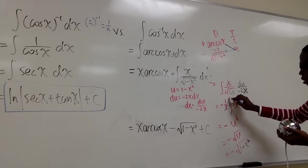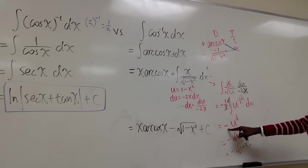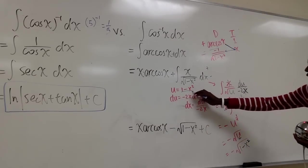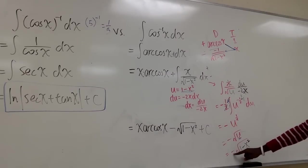And the 2 cancels out with that 2. You have a negative u to the half. And the negative u to the half in radical form is negative radical u. And we just do the final replacement and take it back to the x world. u was equal to 1 minus x squared. And we just replace it. Negative radical 1 minus x squared.